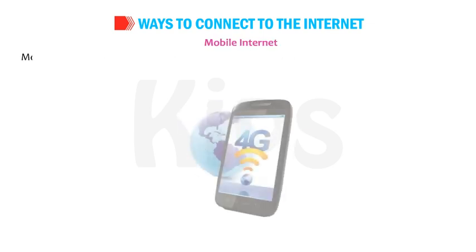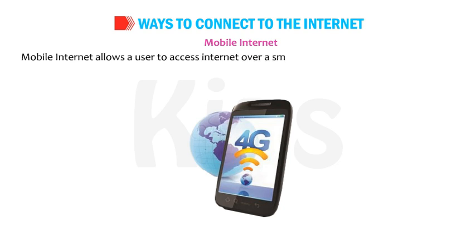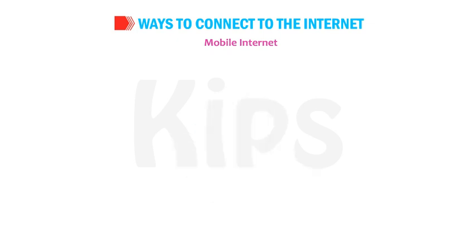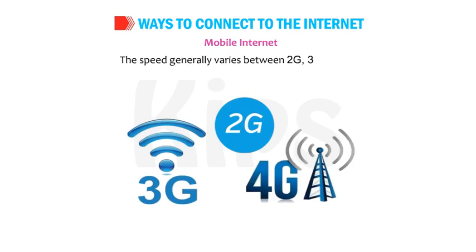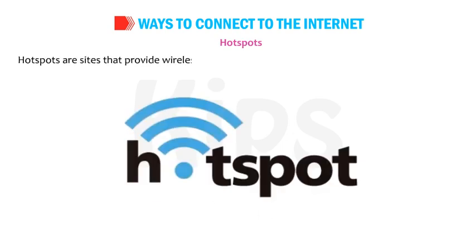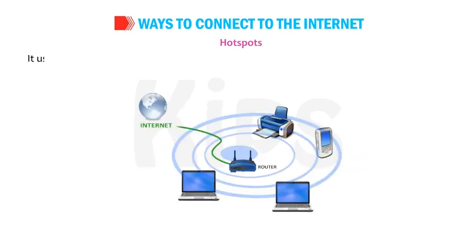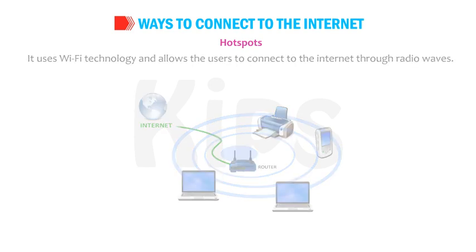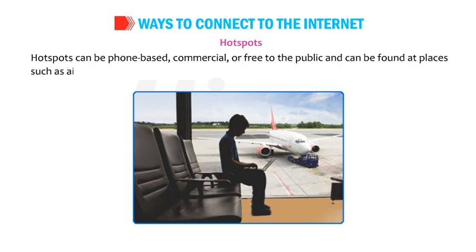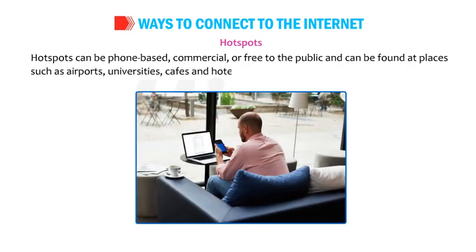Mobile Internet allows a user to access the Internet over a smartphone using the network provided by the phone service provider. This technology provides high-speed wireless Internet access, and the speed generally varies between 2G, 3G and 4G. Hotspots are sites that provide wireless Internet access over short distances of approximately 20 meters. They use Wi-Fi technology and allow users to connect to the Internet through radio waves. Hotspots can be phone-based, commercial or free to the public, and can be found at airports, universities, cafes and hotels.